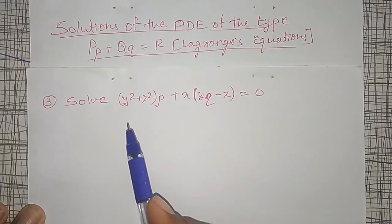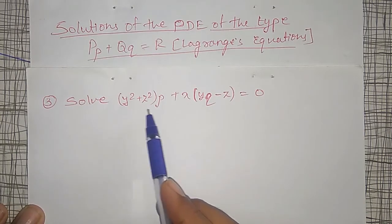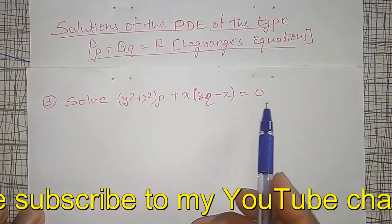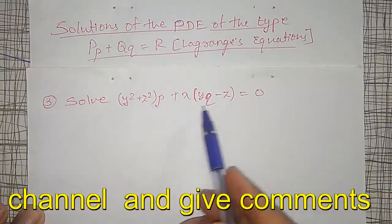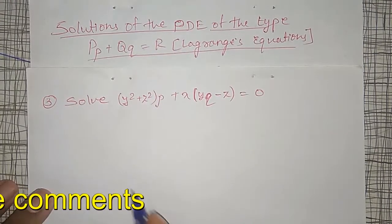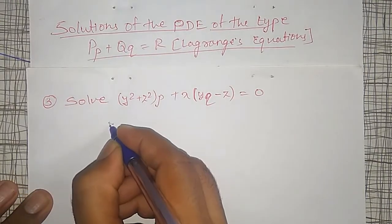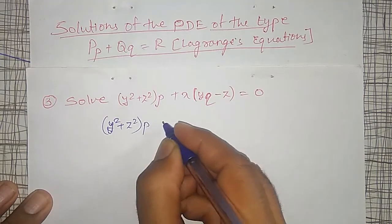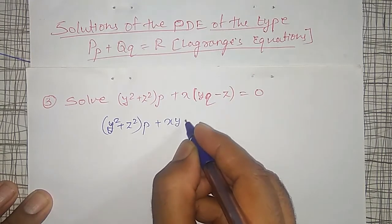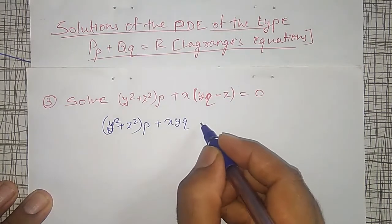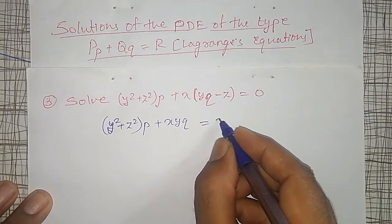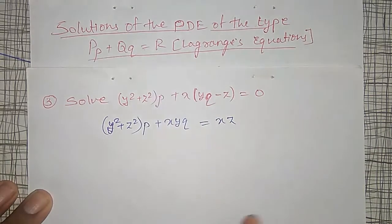The first example is: (y² + z²)p + x(yq - z) = 0. I will convert the given equation into the standard form, that is (y² + z²)p + xy·q = xz. Now it is in the standard form.